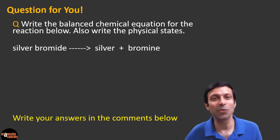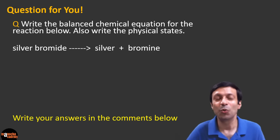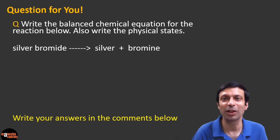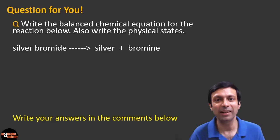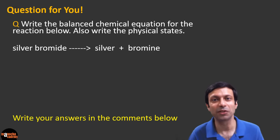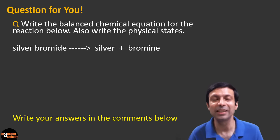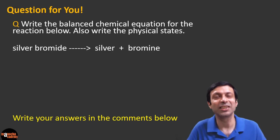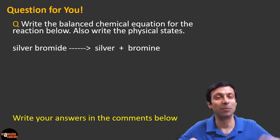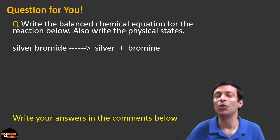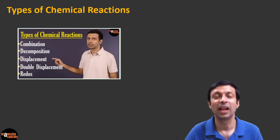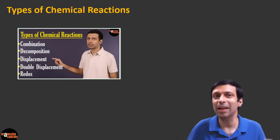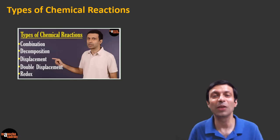Now that we're done with the concepts, I have a question for you. Try to write the balanced chemical equation for this reaction: silver bromide in the presence of sunlight gives silver and bromine — and also write down the physical states of the substances involved. Do let me know your answers in the comments below. I also have a video on the different types of chemical reactions, so you can watch that next.